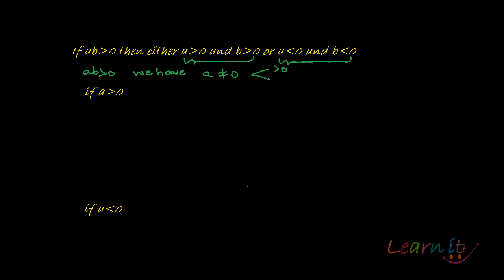Since a is not equal to zero, there are two situations: either a is greater than zero or a is less than zero. In Case 1, we assume a is greater than zero. If a is greater than zero, then 1/a will also be greater than zero. We have a·b greater than zero.